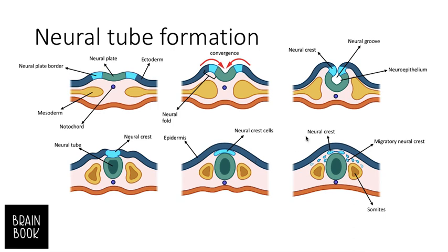After this, neural crest cells migrate away and we also have somites derived from the mesoderm. This is why we say the nervous system originates from the ectoderm — it begins as ectoderm and neural plate, then becomes the neural groove and neural tube.